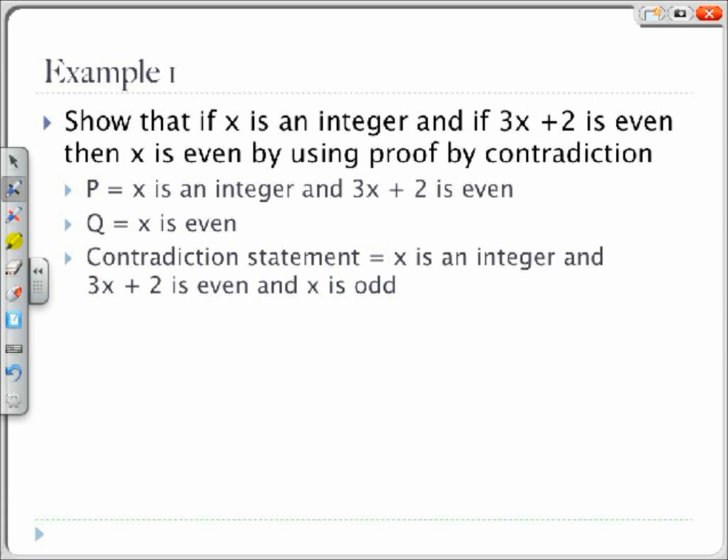Our first example, we are going to use proof by contradiction to show that if x is an integer, and if 3x plus 2 is even, then x is even. So, our hypothesis, P, is x is an integer, and 3x plus 2 is even. Our conclusion, Q, is that x is even. So you can see we have an if P then Q statement.